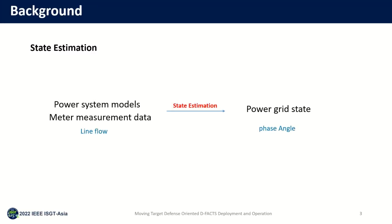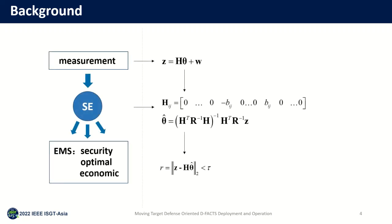In the process of power system operation, state estimation plays a key role. The system state is estimated from the system measurements and the system model. In the DC model, the measurement value is the line flow represented by vector Z, and the state is the bus phase angle represented by vector X. In the relationship between the measurement value and the system state, matrix H consists of the line reactances. System state can be obtained by least squares estimation.